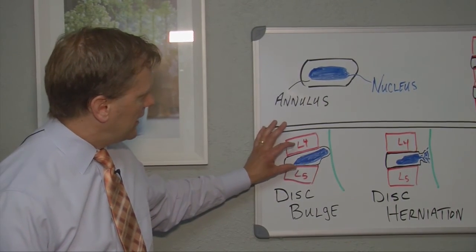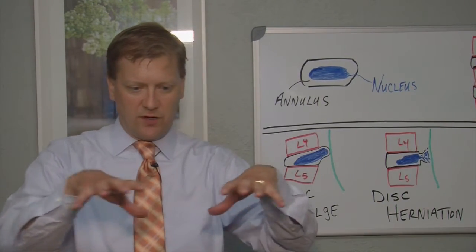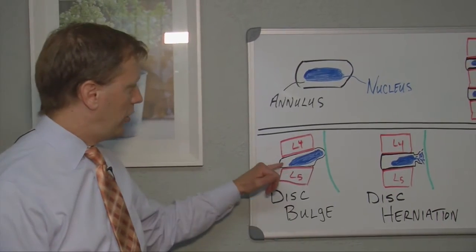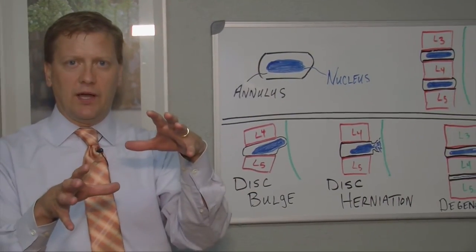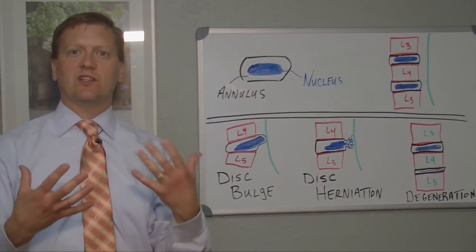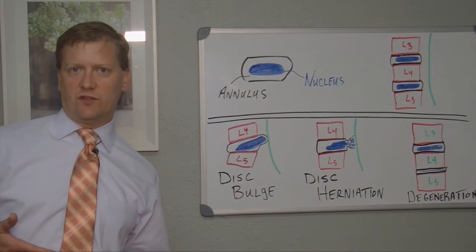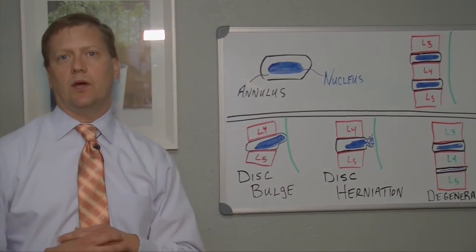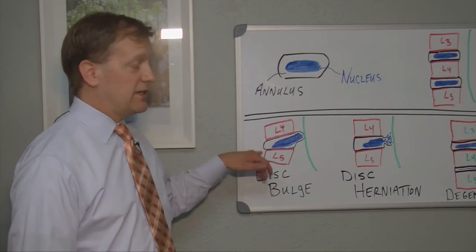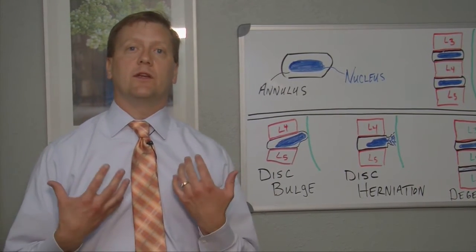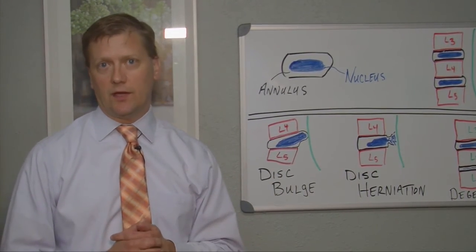Because what happens when it bulges—you can see in the normal setting, the disc is very level. In a bulge setting, it causes the spine to shift, and you actually end up in a slightly shifted position, and that becomes quite painful. The good news about a disc bulge: no surgery really is required. There are just very simple physical therapy exercises to help with a disc bulge.